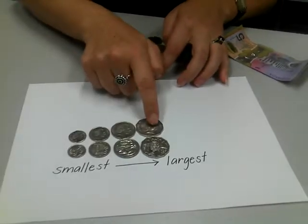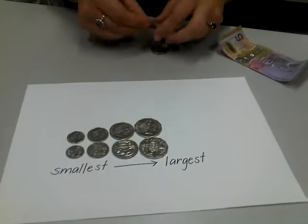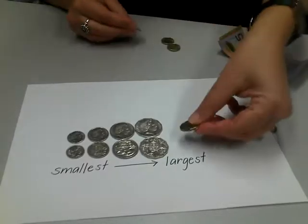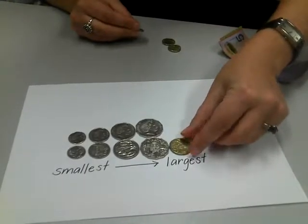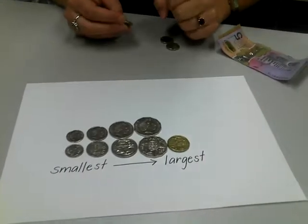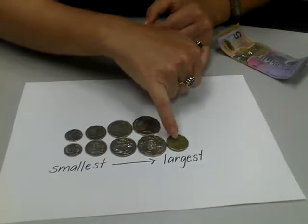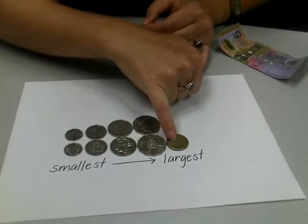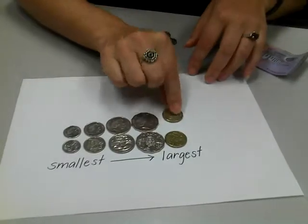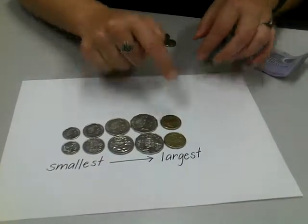You can see a pattern here — all coins have a picture of the Queen's head on one side. This is the gold one dollar coin and it's got kangaroos on it, the number one and the word dollar, and a picture of the Queen's head.